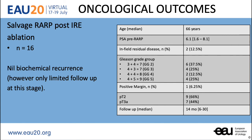Salvage radical prostatectomy was performed in 16 patients, and to date there has been no biochemical recurrence. The positive margin rate in this group was only 6.25%, that is one patient. Over 90% of patients were continent.